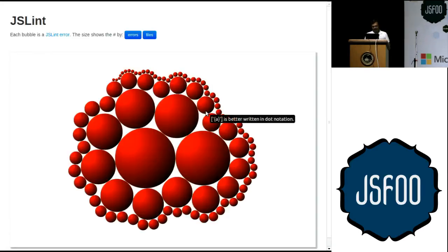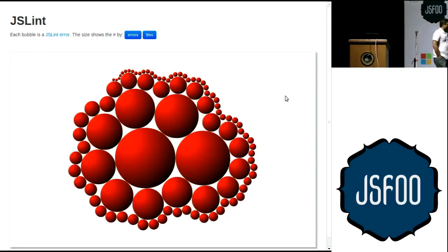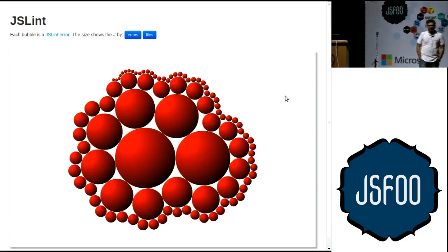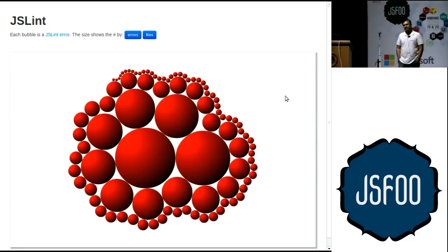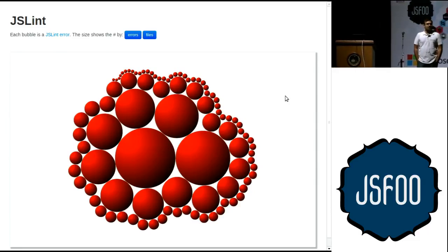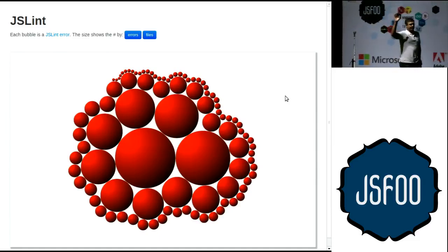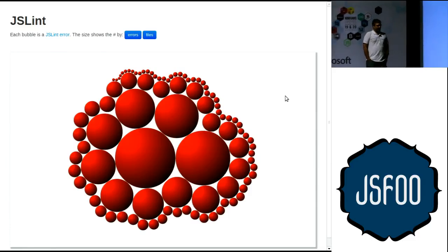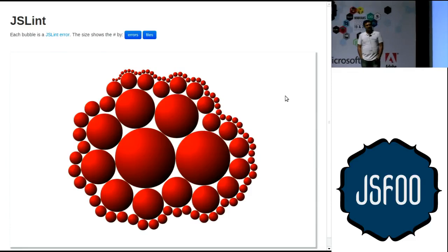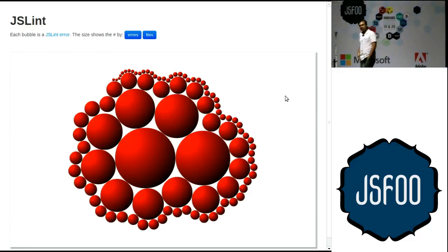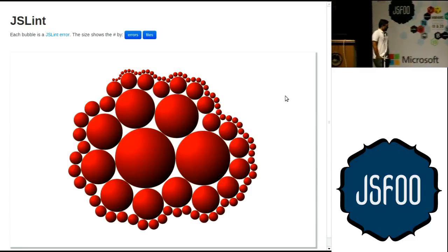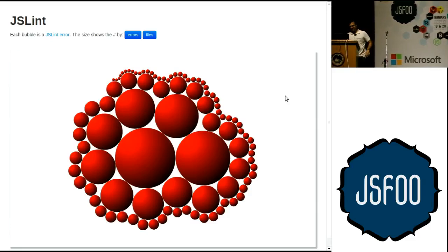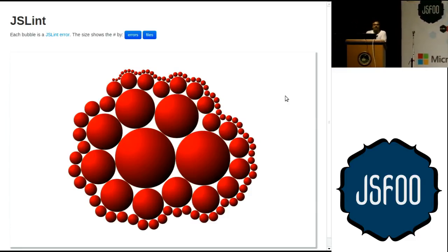Since we are in a JavaScript conference, let's take JSLint. We scrolled GitHub for about 10,000 users or so, took all of their JavaScript repositories, and asked: what kinds of JSLint errors do they make most often? JSLint is a sort of error checker for JavaScript — it checks for things like whitespace, good style practices, and potential security errors. Each bubble is one JSLint error and the size represents the total number of files that contain that error.